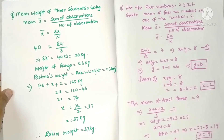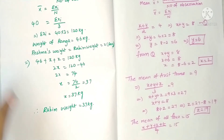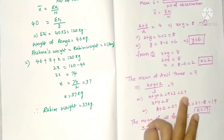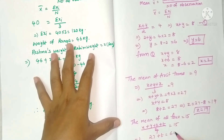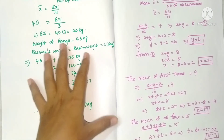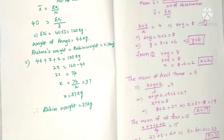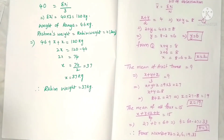The mean of all four numbers is 15. So x plus y plus z plus t by 4 equals 15. We know x plus y plus z equals 27, so 27 plus t equals 60. Therefore t equals 60 minus 27, which is 33. So the four numbers are 2, 6, 19, and 33.